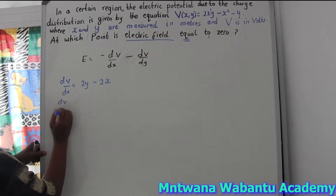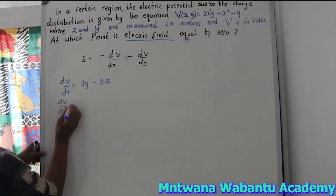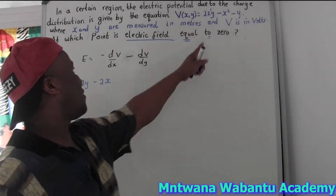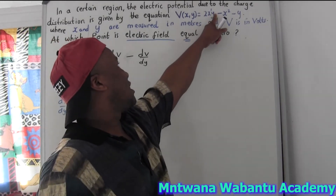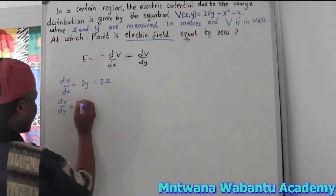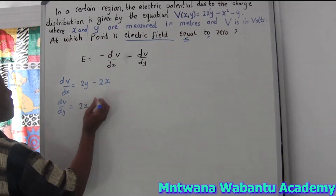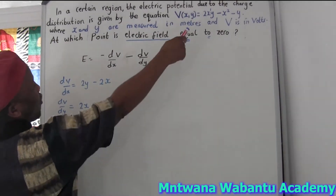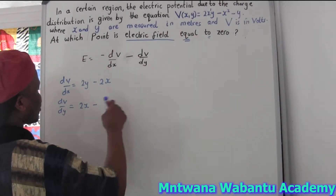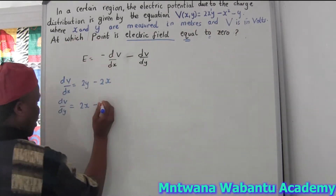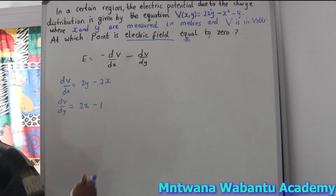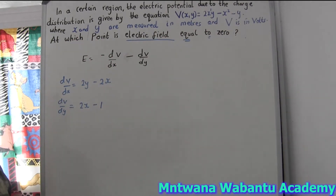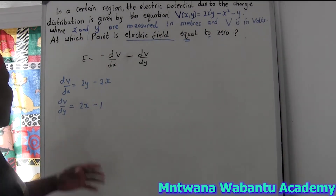Now for dV/dy, I differentiate with respect to y. The first term gives 2x when we differentiate 2xy with respect to y. The next term has no y so it's zero. The constant term gives 1. So dV/dy = 2x + 1... wait, actually dV/dy = 2x - 1.